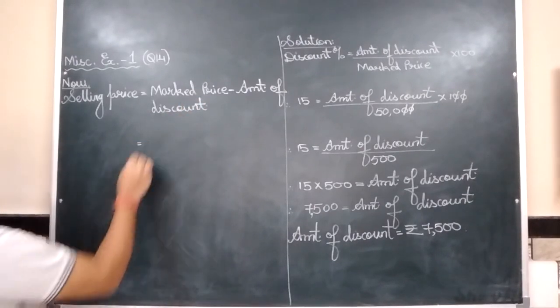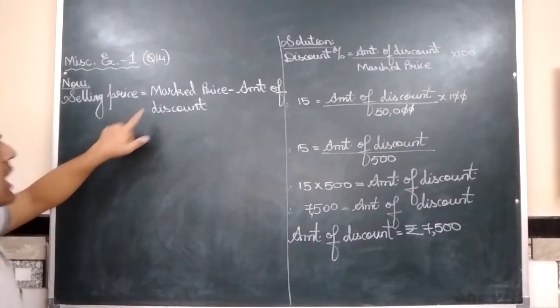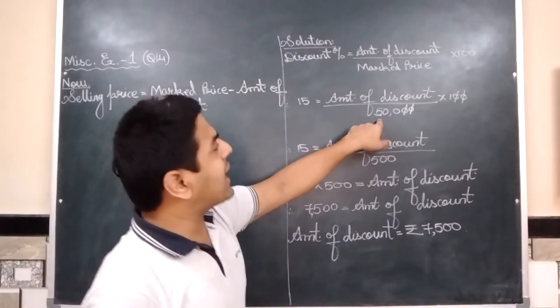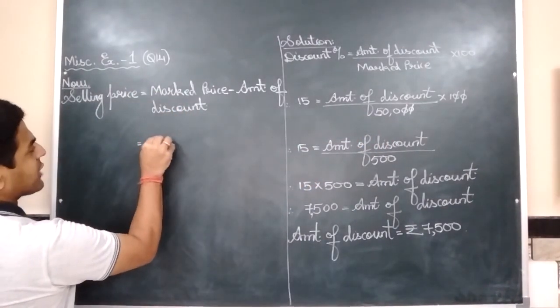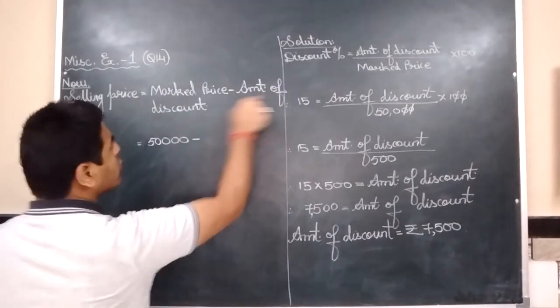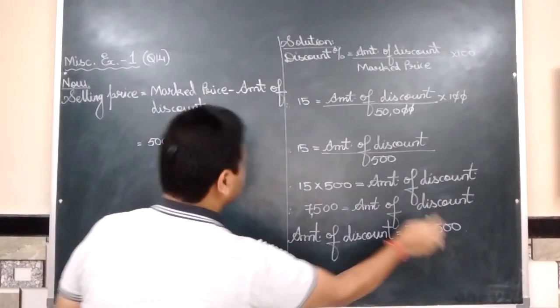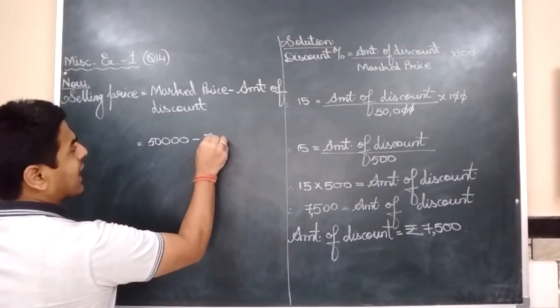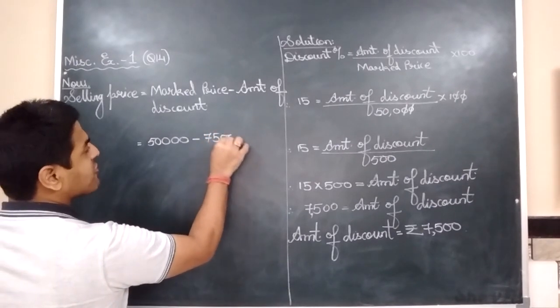We don't know what is the selling price, so forget it. Marked price is 50,000. So I will write here 50,000 minus amount of discount is 7,500. So I will write here 7,500.